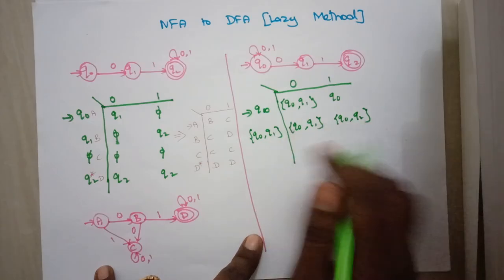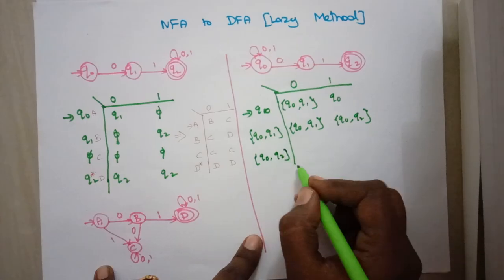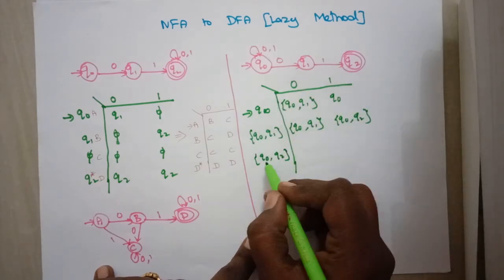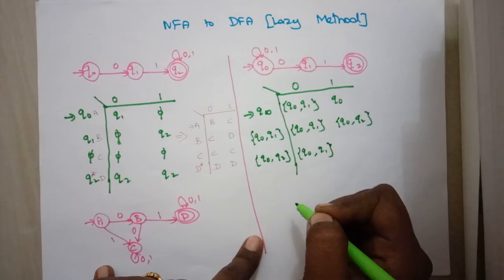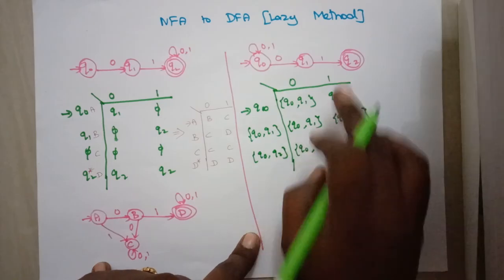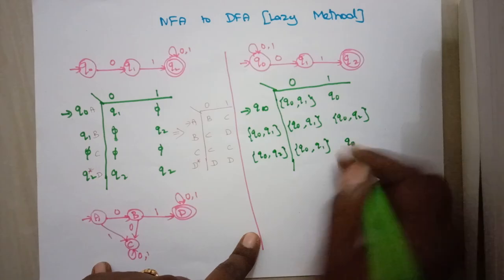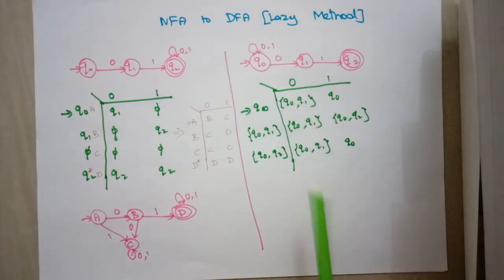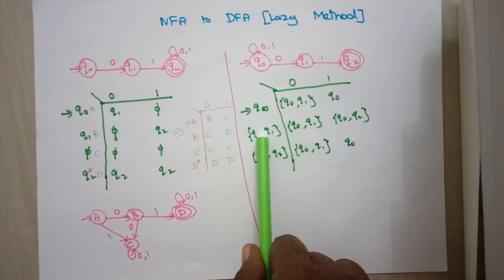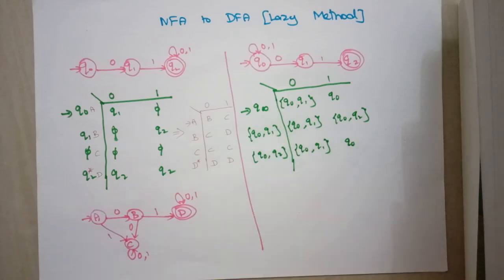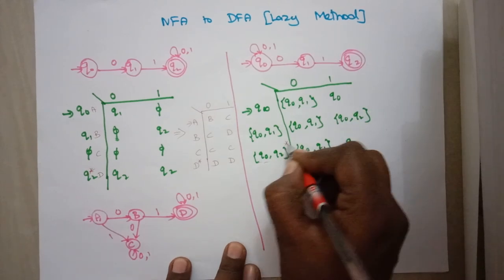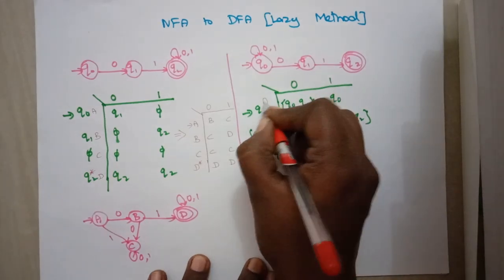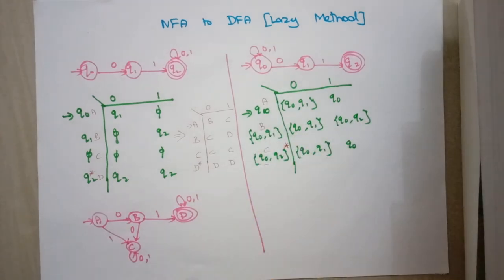For {q0, q1} on input 1: q0 stays in q0 and q1 goes to q2, giving the new subset {q0, q2}. The transition for {q0, q1} on input 0 was already noted as {q0, q1}. Now for {q0, q2}: on input 0, q0 goes to {q0, q1} and q2 has no transition — result is {q0, q1}. On input 1, q0 stays in q0 and q2 has no transition — result is {q0}. The final state of the NFA is q2, so any subset containing q2 is a final state.